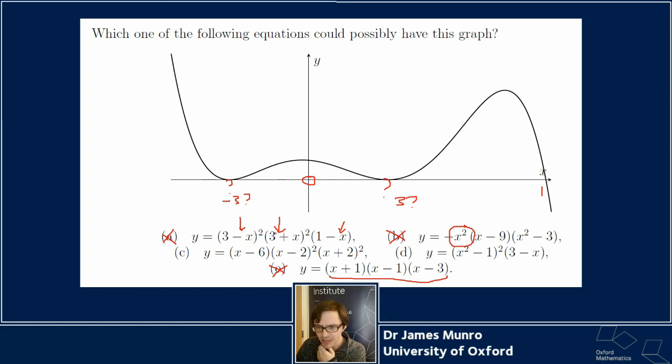It's got this repeated root at 3 and minus 3, which kind of matches this bit. But then sadly 1 is not bigger than 3. That leaves D and C, which are the two most popular options. I think the best way to tell apart C and D, so this one has the roots, repeated root at 2, repeated root at minus 2, root at 6.